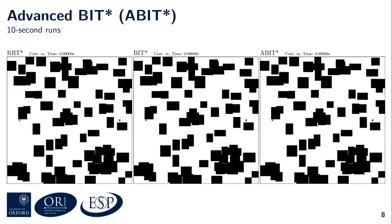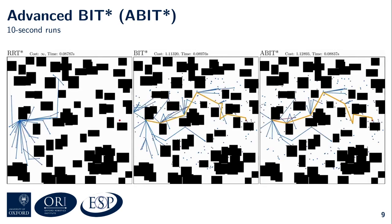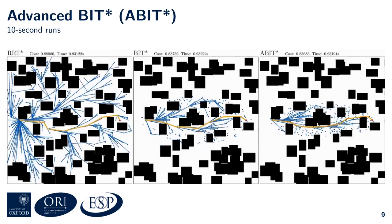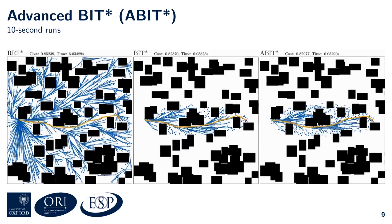A-BIT* is not restricted to narrow passage problems and also performs well in obstacle configurations with many homotopy classes. Let's look at time-synchronized 10-second runs of RRT* on the left, BIT* in the middle, and A-BIT* on the right. A-BIT* finds an initial solution in just 0.02 seconds, followed by BIT* at 0.7 seconds, and then RRT* at 0.38 seconds. A-BIT* has already found its initial solution, now BIT* has found its initial solution, and now RRT* has found its initial solution as well. By now, all planners have found the optimal homotopy class and are converging towards the optimal solution.